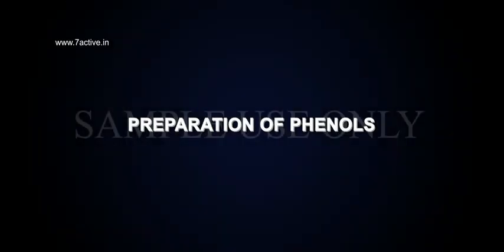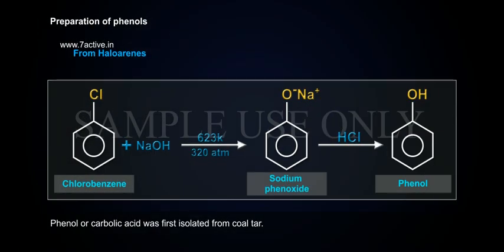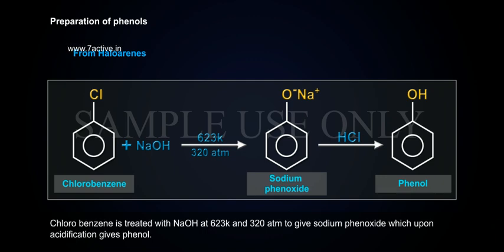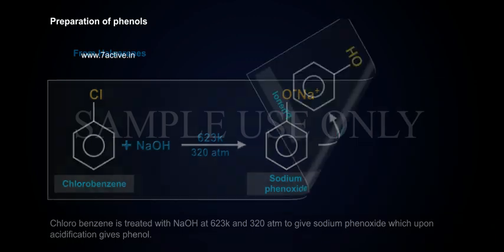Preparation of Phenols. Phenol or carbolic acid was first isolated from coal tar. Chlorobenzene is treated with NaOH at 623 Kelvin and 320 atmospheric pressure to give sodium phenoxide, which upon acidification gives phenol.